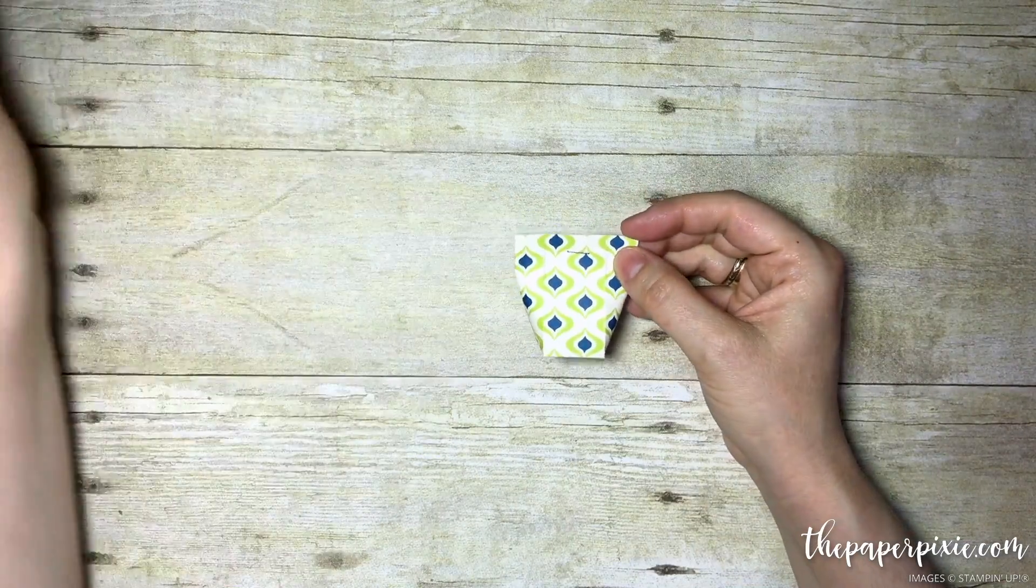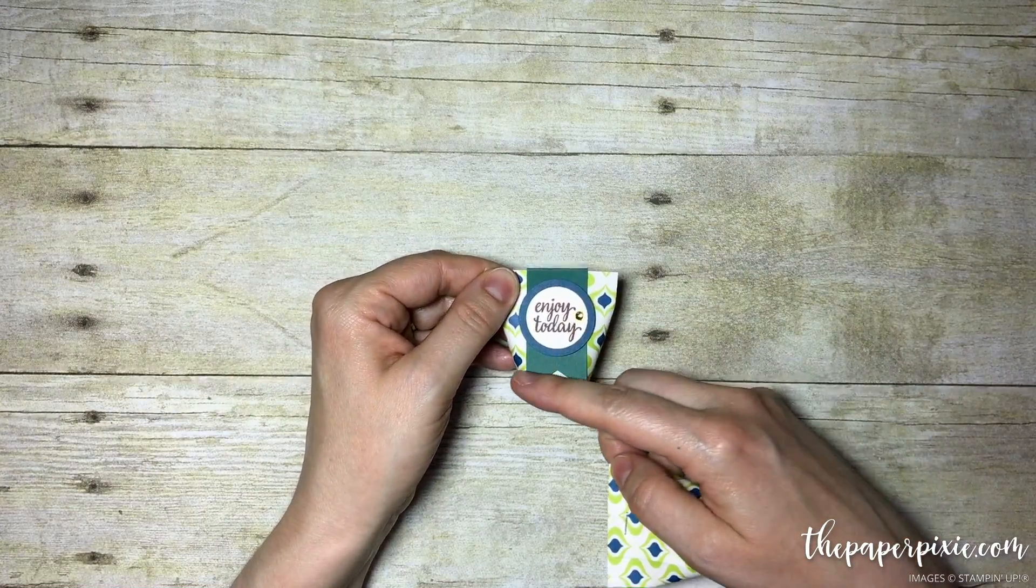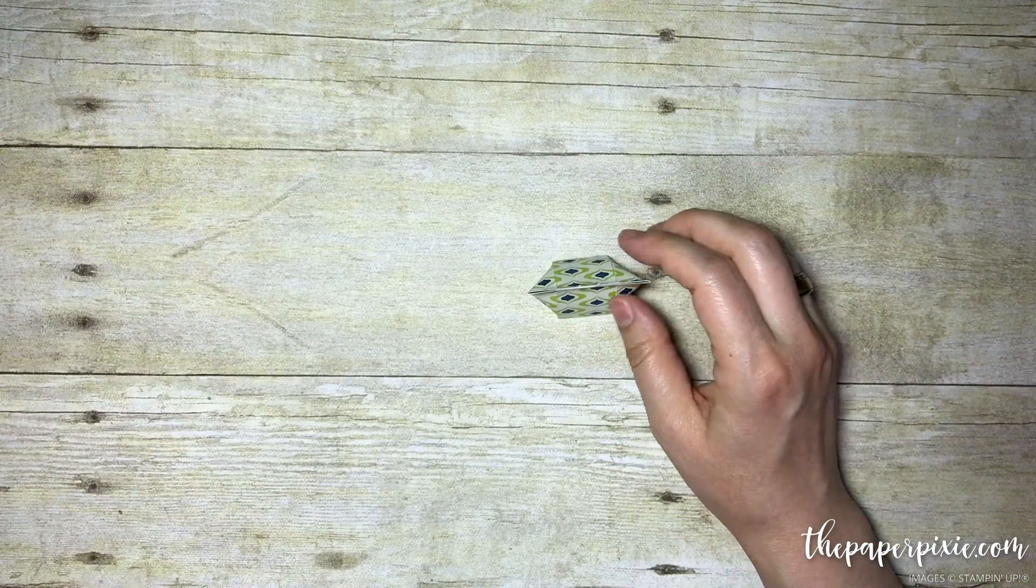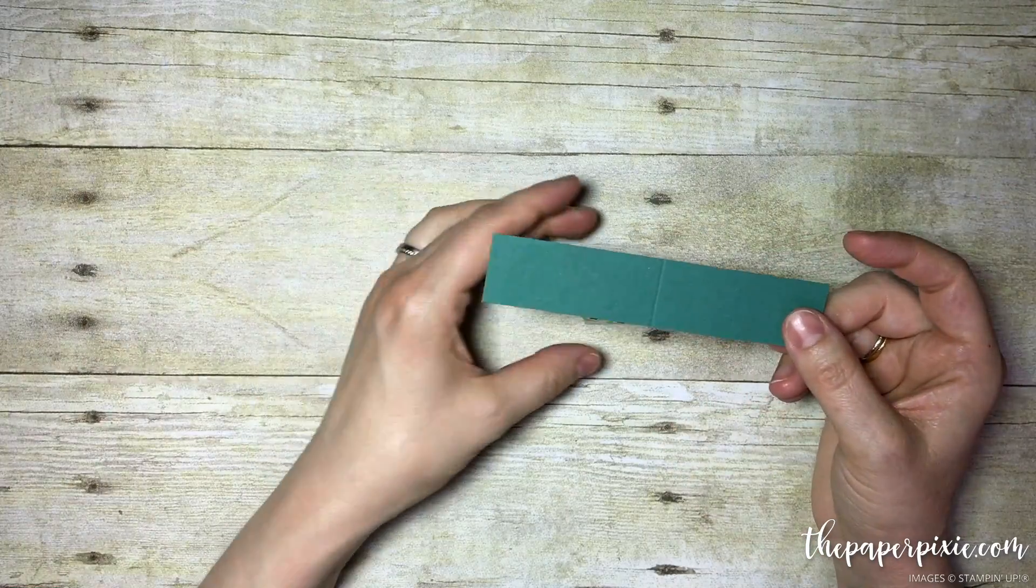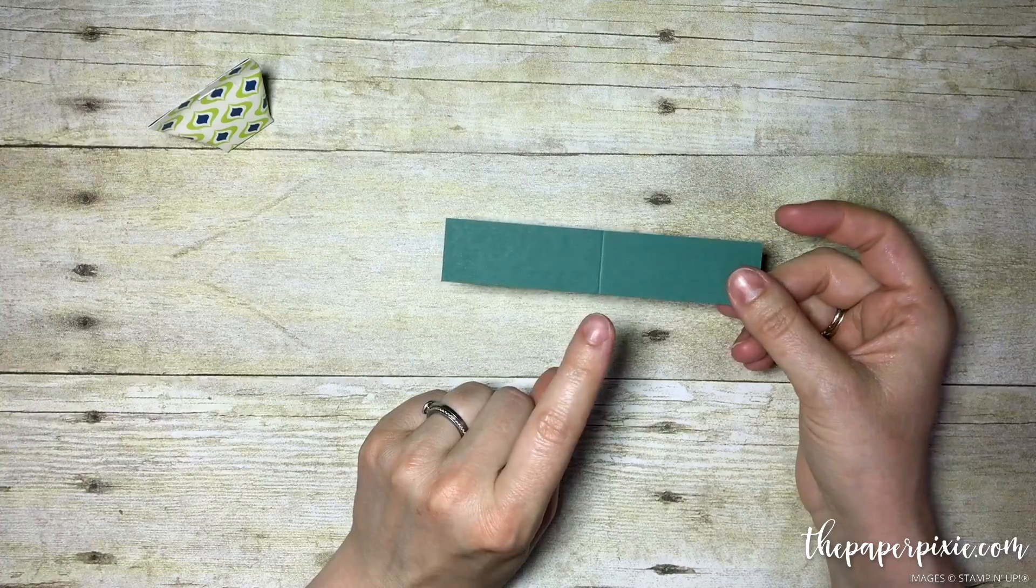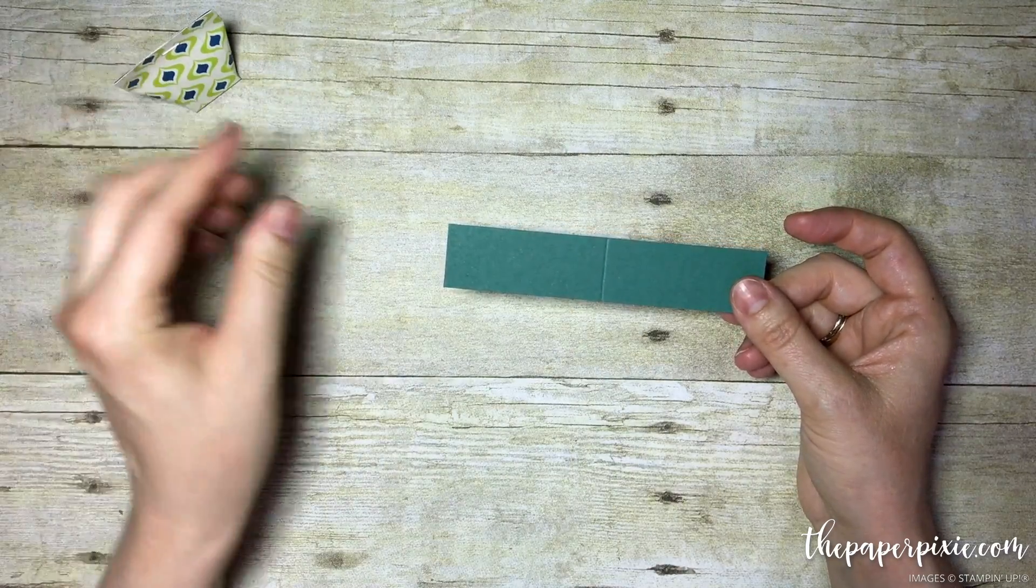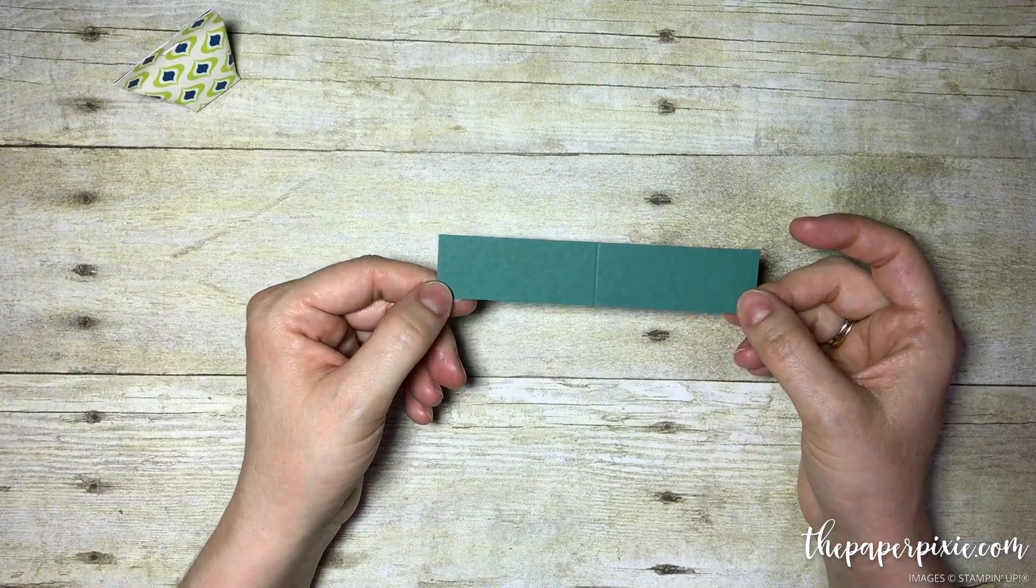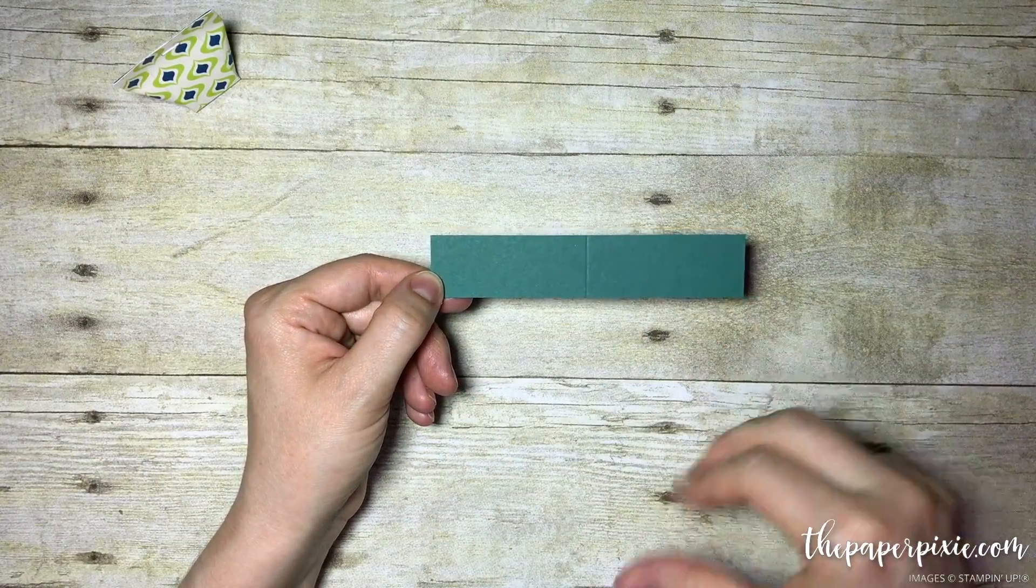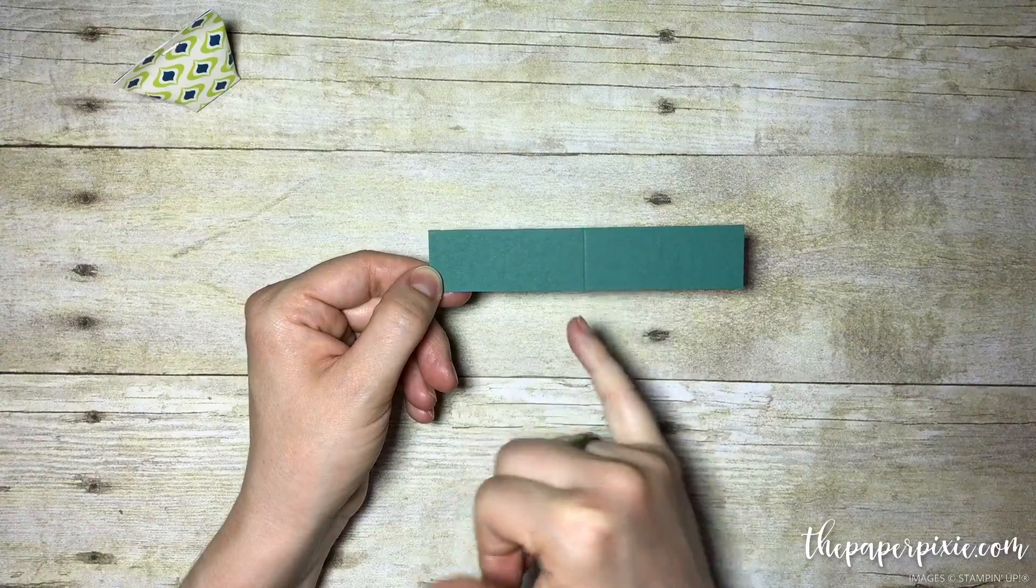Now I want to dress up the front a little bit. We've got a little banner running along the back and our sentiment. For the banner, I've got a piece of cardstock in the new in-color Tranquil Tide. It coordinates with this designer series paper pack and measures 5 by 1 inch. I've scored it at the 2.5 inch mark.